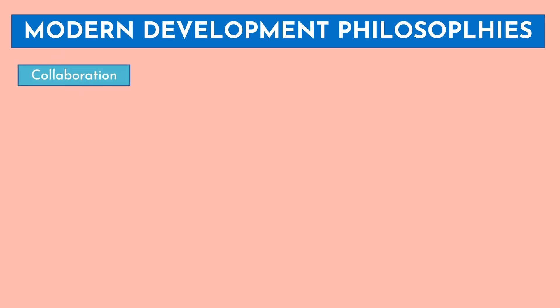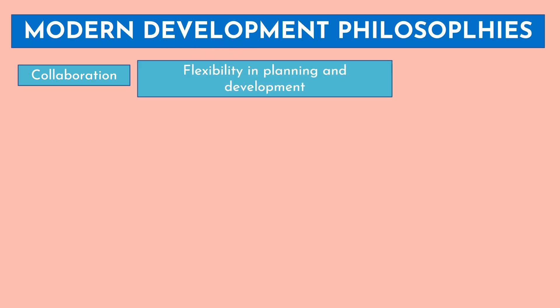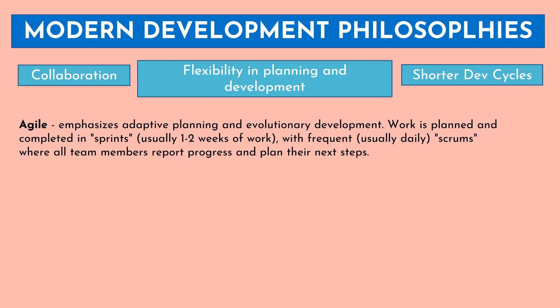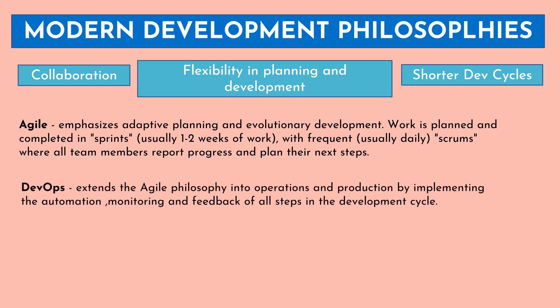That is why there was a need to change this into some modern deployment and development philosophies — Agile, continuous integration and development all come into the picture. Modern development philosophies emphasize mainly on collaboration between different teams and individuals, flexibility in planning and development rather than just executing tasks, and shorter dev cycles. Agile mainly concerns adapting, planning and evolutionary development work. Work is planned and completed in sprints — usually one or two weeks of work — with frequent, usually daily scrum meetings where all team members report progress and plan their next steps. In these meetings, blockers are also reported so that they can be removed or necessary action taken in advance.